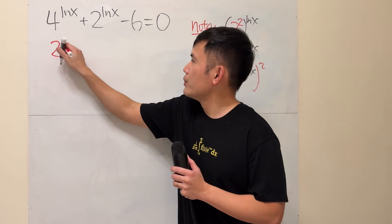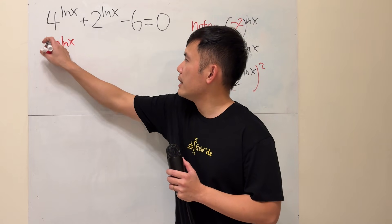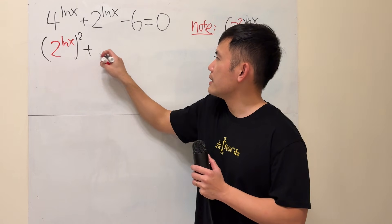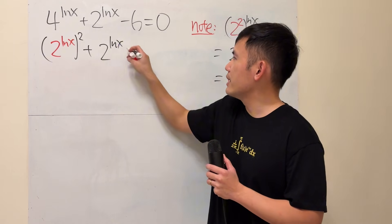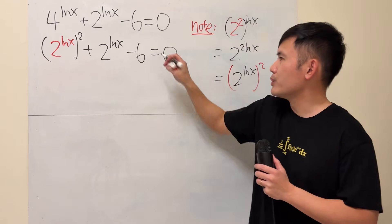We have 2 to the ln x power, and then square, plus 2 to the ln x, and then minus 6. That's equal to 0.